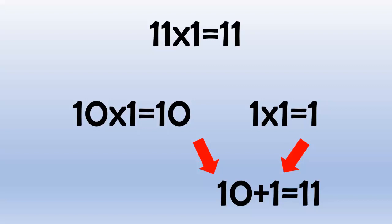11 times 7 equals 77, because 10 times 7 equals 70, and 1 times 7 equals 7, and 70 plus 7 equals 77.